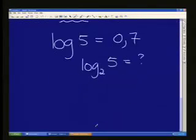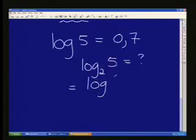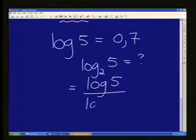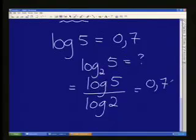And the reason I'm doing this question is because Mags earlier did this law, the change of base law, which basically says that that equals log 5 over log 2. And that's fantastic because we have log 5. It was given as 0.7. But a number of people will get stuck with log 2. What do I do with log 2? I don't know what log 2 is.